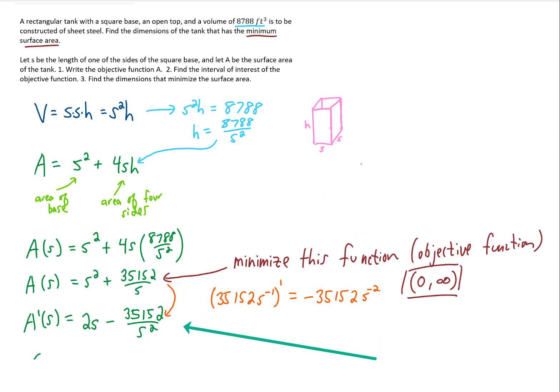Okay, back to the problem at hand. We're still trying to find critical points. So we're still trying to set this objective function equal to 0. And I'll try to use all this space here. I'm going to add this 35152 term to both sides of the equation.